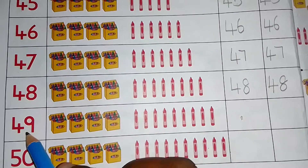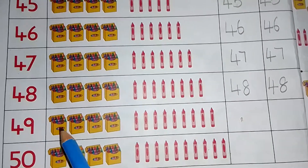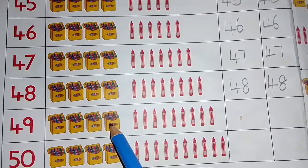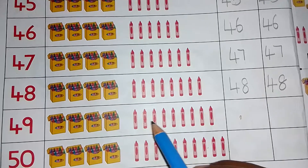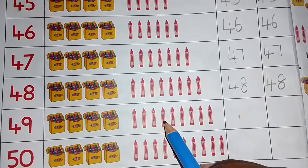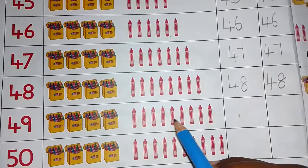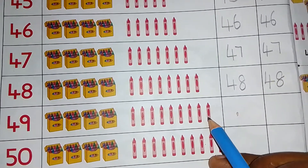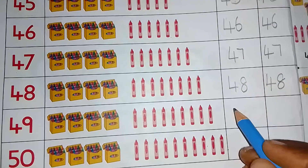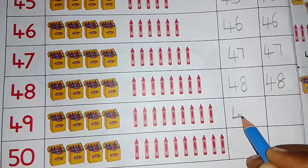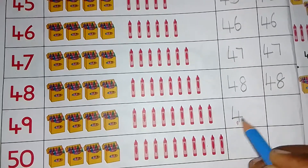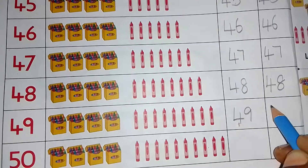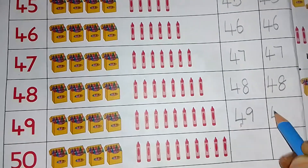Next number 49. 10, 20, 30, 40, 41, 42, 43, 44, 45, 46, 47, 48, 49. We write number 49. Write 4, then 9. 49.